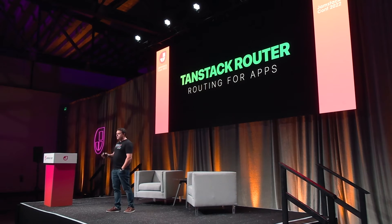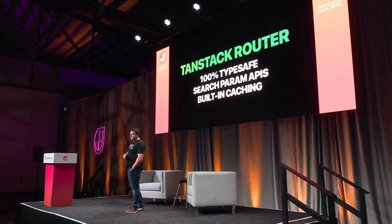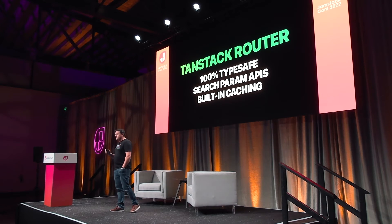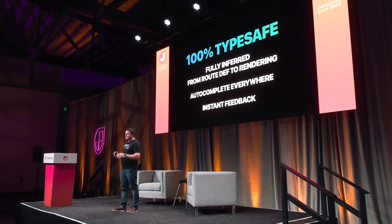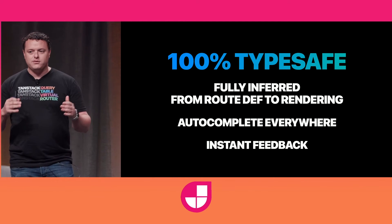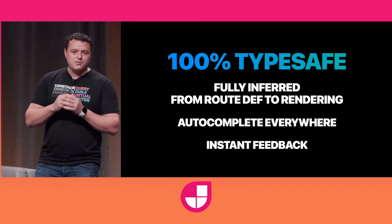TanStack Router is our new router for building applications. It's 100% type safe across the entire API. It has amazing search parameter APIs for managing state, and it also has built-in caching. The type safety in TanStack Router is fully inferred all the way from your route definitions down to the call sites, rendering, and usage in your components and routes.